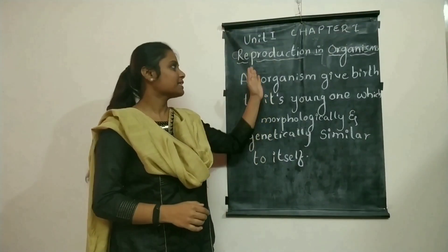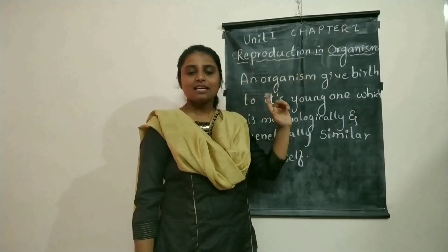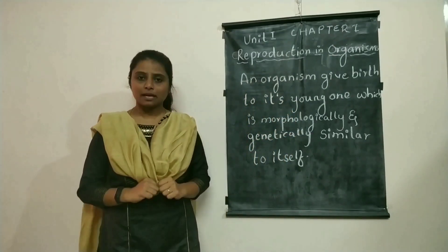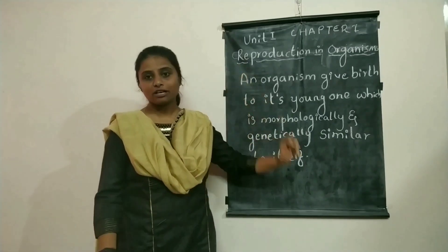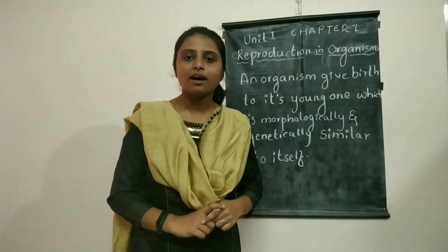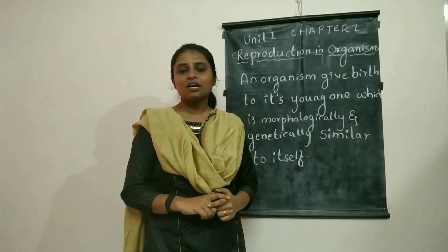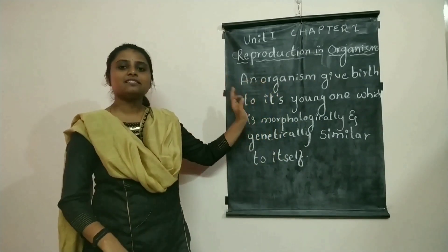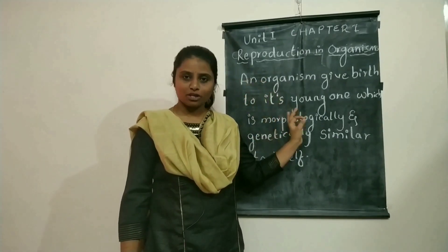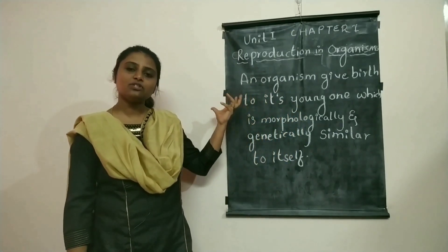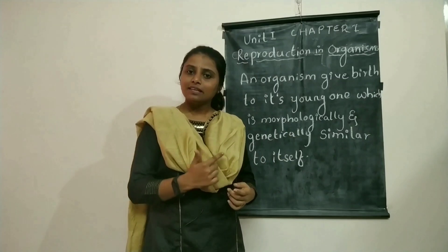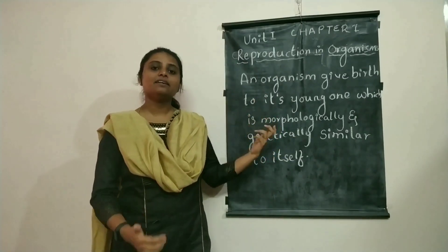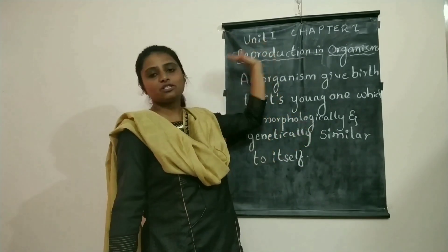Today we are learning a new lesson: reproduction in organisms. This is the first unit of your biology, and in this unit we will learn four chapters. The first chapter is reproduction in organisms, the second is reproduction in flowering plants, the third is human reproduction, and the fourth is reproductive health. This chapter is an introductory one in which we will learn some terminologies along with types of reproduction, which will help you understand the further chapters in the first unit.